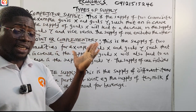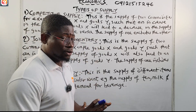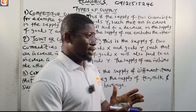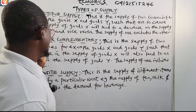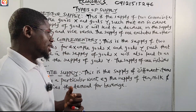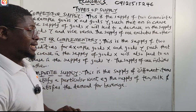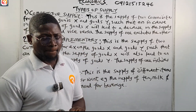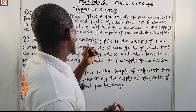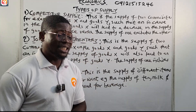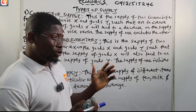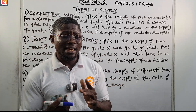Now let us go to the types of supply. There are three types we're going to look at: competitive supply, joint or complementary supply, and composite supply.